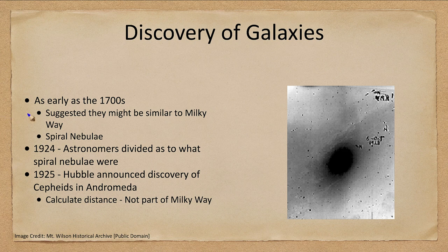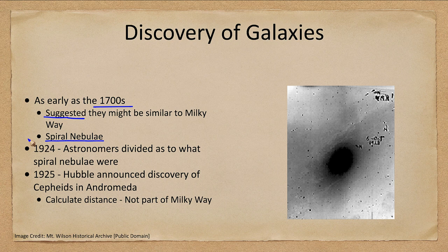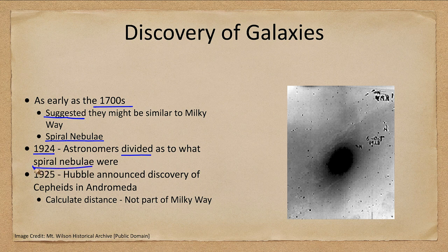As early as the 1700s it was suggested that there might be other galaxies similar to our Milky Way, but it really was not known. They were called the spiral nebulae and there was a great debate as to whether they were part of our Milky Way or external galaxies. As late as 1924 astronomers were very divided on this question.